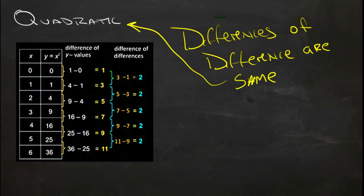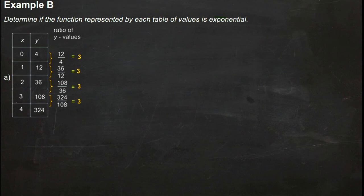And finally, for this third example here, this is an example of an exponential model. In an exponential model, your differences aren't going to be the same. Your differences between your differences aren't going to be the same. But the ratio of the values themselves will be the same.